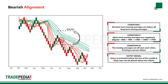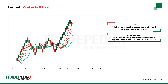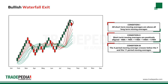A bullish waterfall exit is given when the following conditions are met. Condition one: all short-term moving averages are above all long-term averages. Condition two: all short-term moving averages are positively aligned. Condition three: the 4 period moving average crosses below the 7 and 11 period moving averages. The exit is activated below the low of the candle that generated the signal.